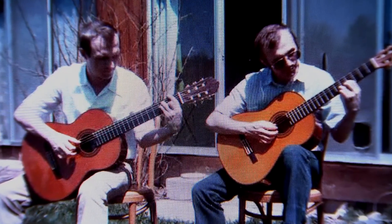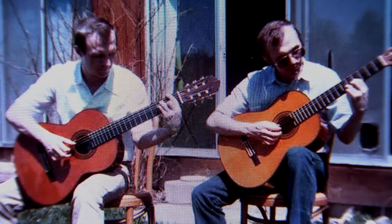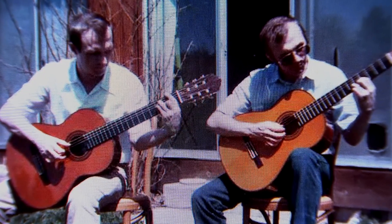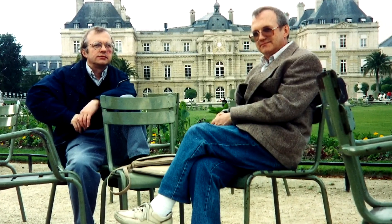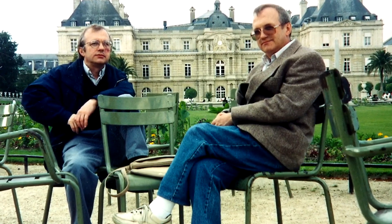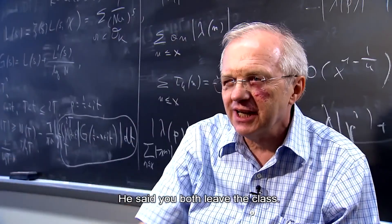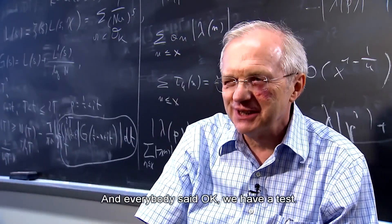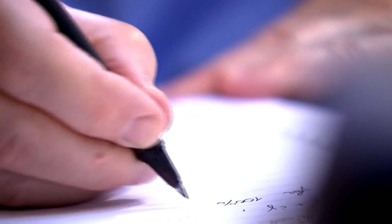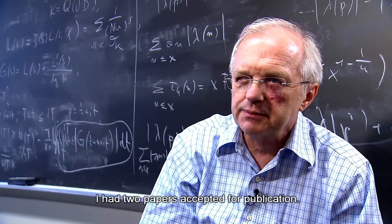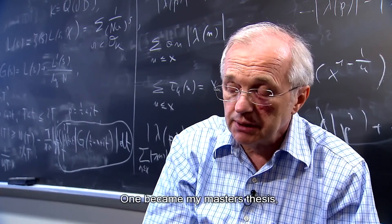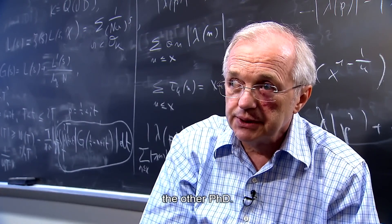Henryk's twin brother Tadeusz is also a mathematician. They inspired and challenged each other in high school, where they were so far ahead of other students that when the teacher came in for an exam, he told them both to leave — they didn't even write tests. At Warsaw University, during his undergraduate study, Henryk had two papers accepted for publication — one became his master's thesis, the other his PhD.